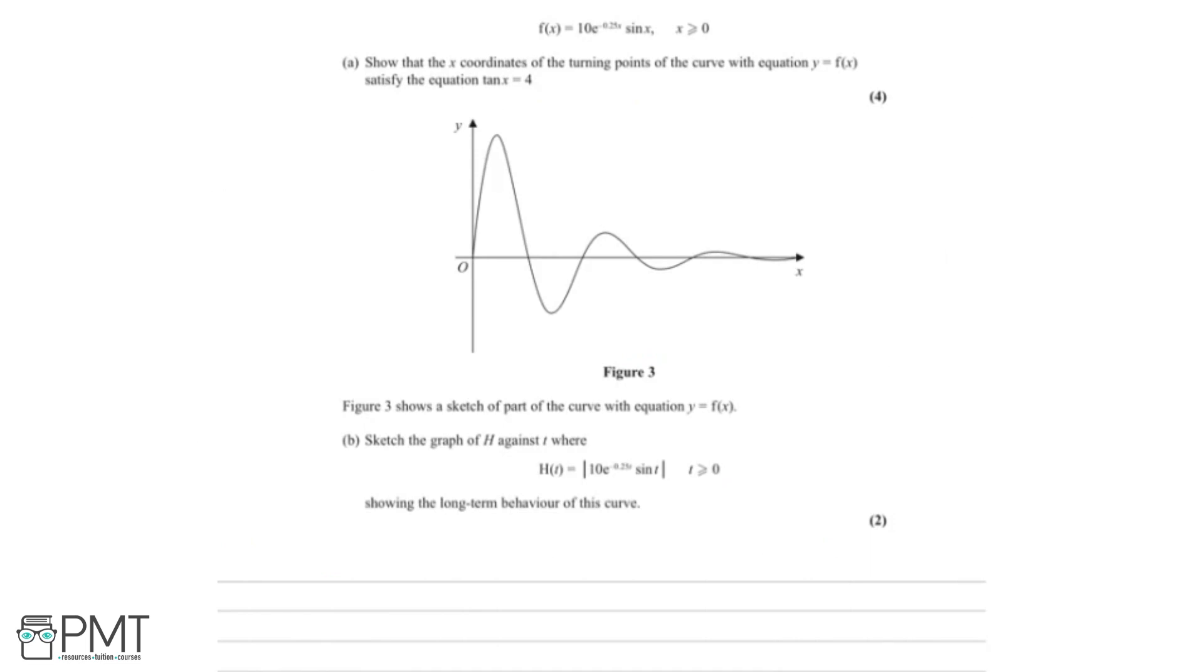So now we're going to take a look at part b. Part b says we need to sketch the graph of h against t, where h(t) equals the modulus of 10e^(-0.25t) sin t. And we need to show the long-term behaviour of this curve, and this is for two marks.